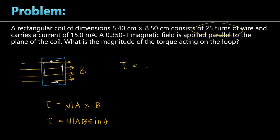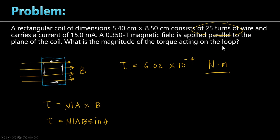The torque is 6.02 times 10 to the negative 4 newton meters. Note that the unit of torque is newton meters, but we do not express it as joules — joules are for work and energy. This is torque, so we keep it as newton meters.